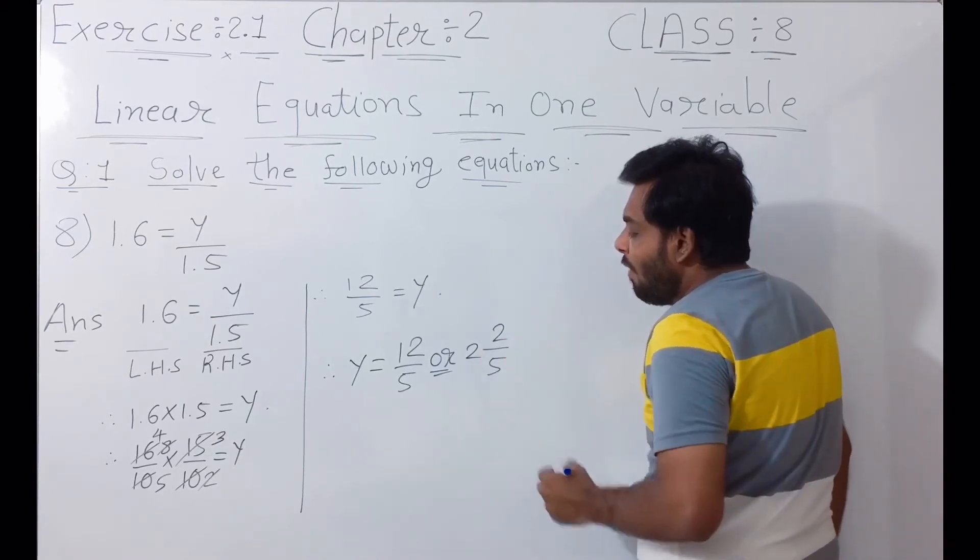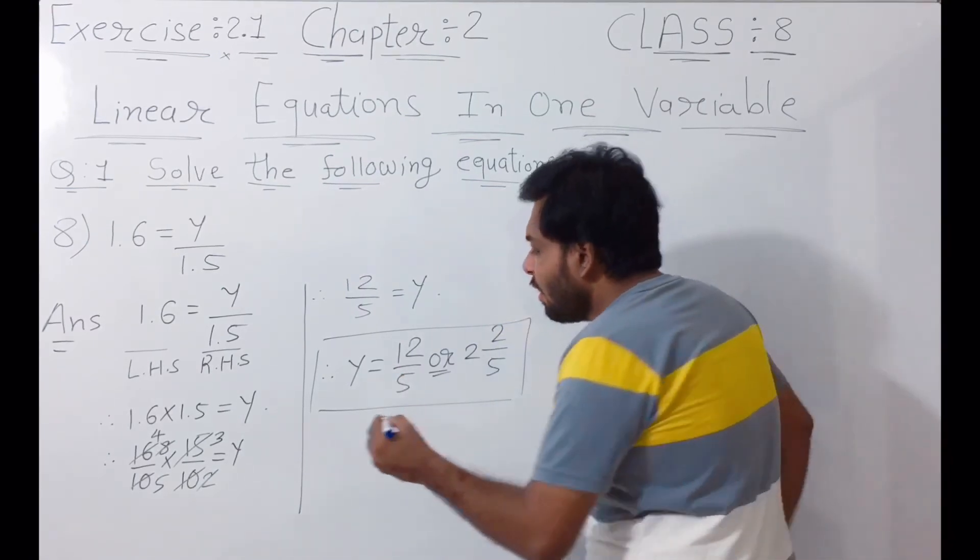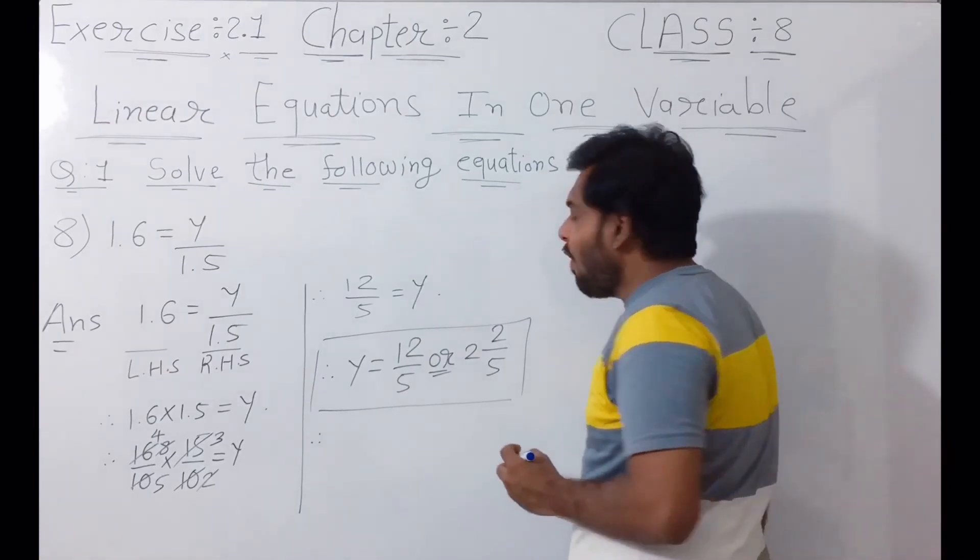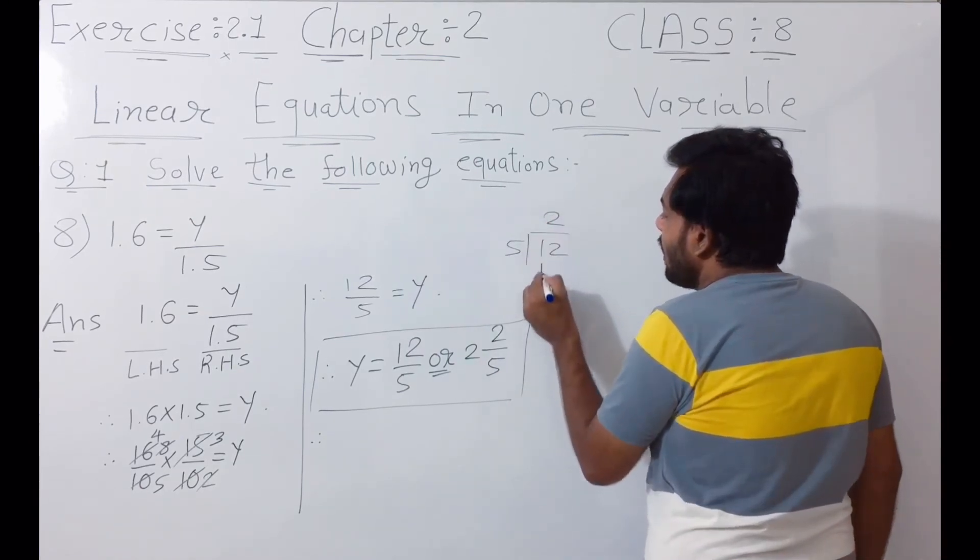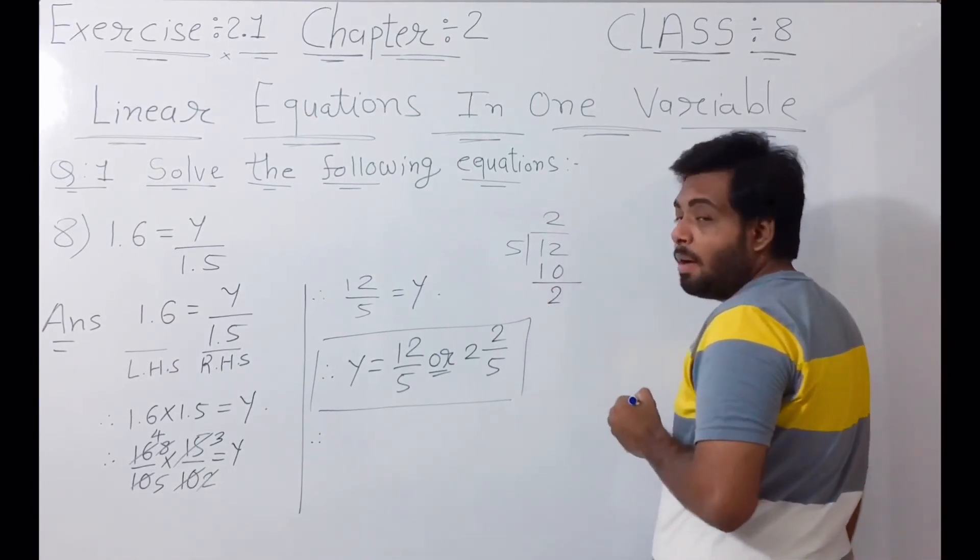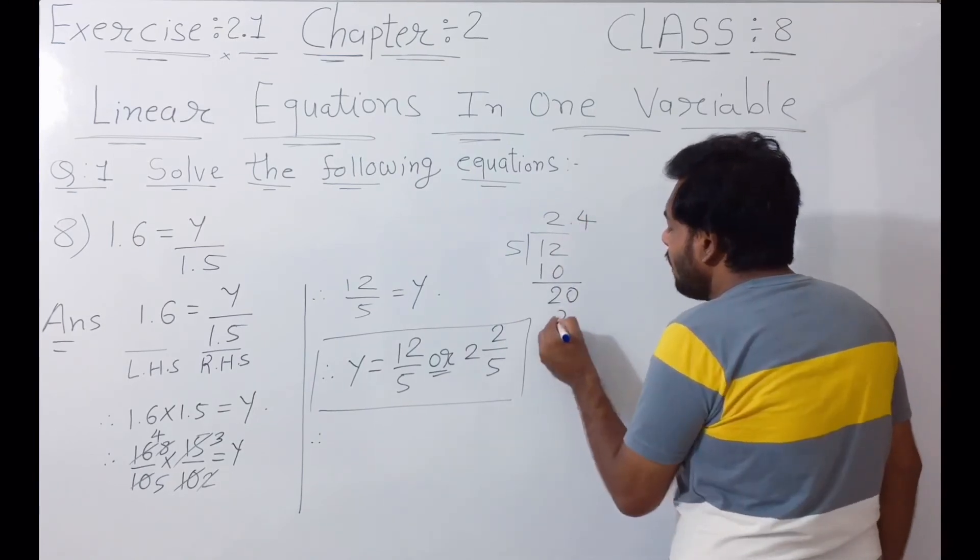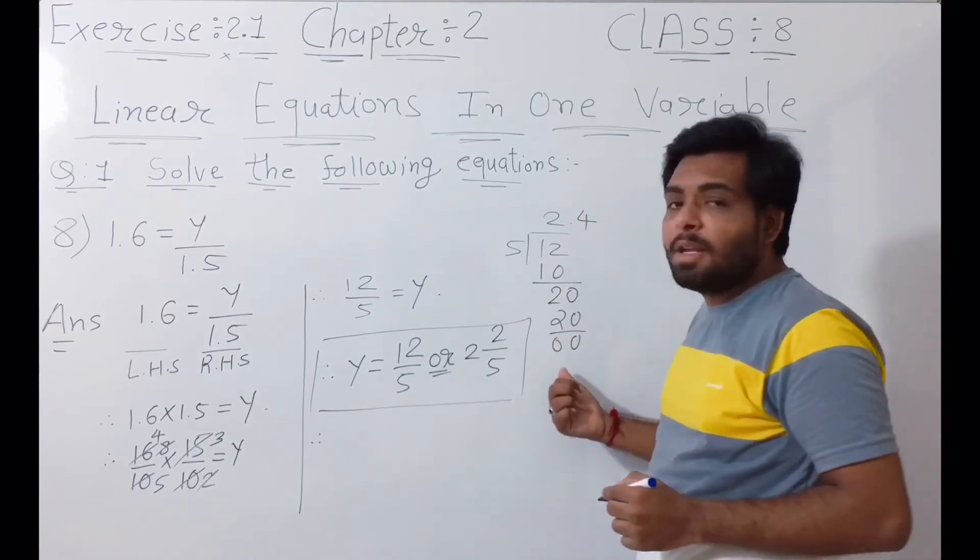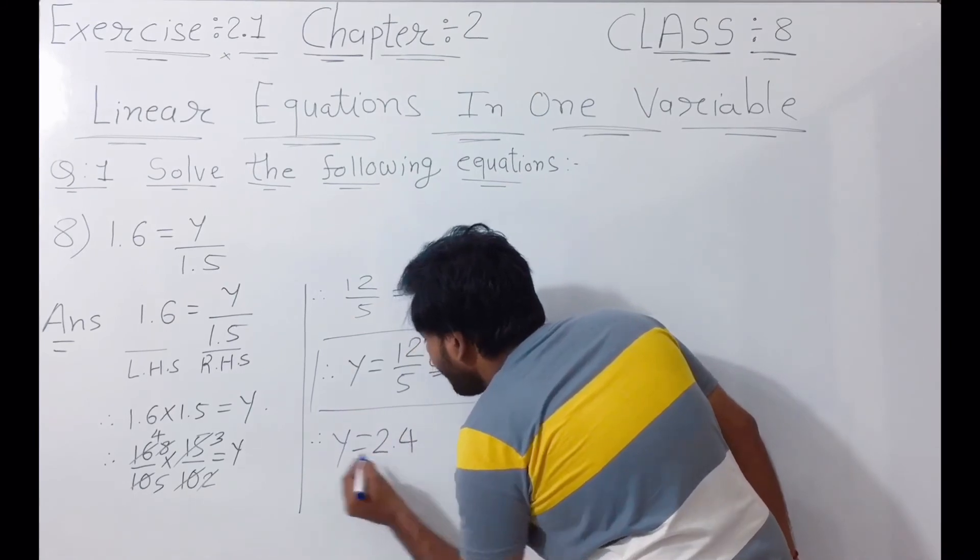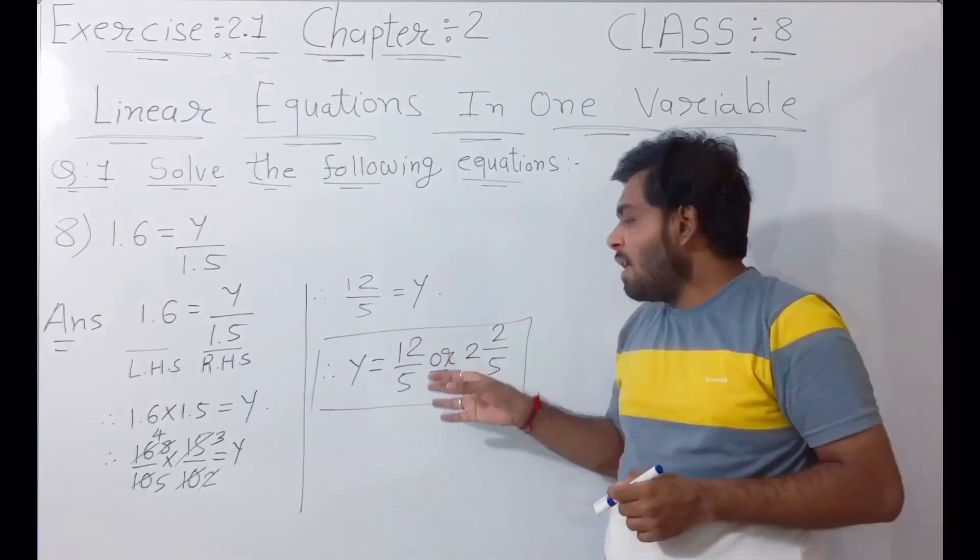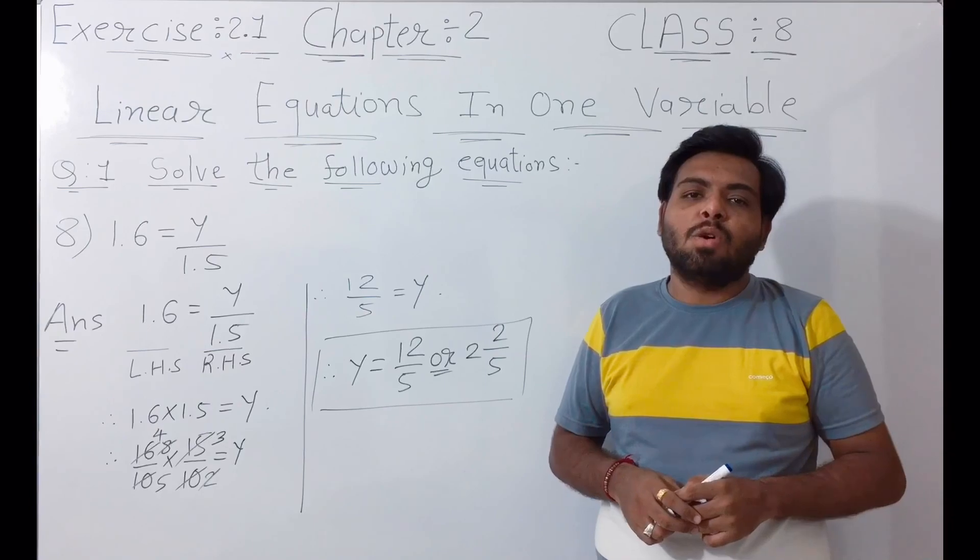Now we perform the division: 5 goes into 12, that's 2 with remainder 2. We put 0, then here is the decimal point. 5 goes into 20, that's 4 with remainder 0. So the answer is y is equal to 2.4. This is the answer of example number 8 of question number 1 of Exercise 2.1. We will meet in the next video, so see you soon.